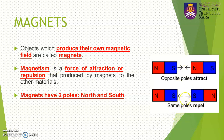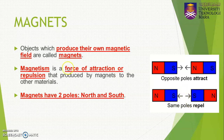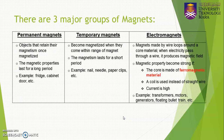When you have the same poles — for example, south and south — and bring them closer together, the same poles repel each other. This force of repulsion we also call magnetism. There are three major groups of magnets: the first is the permanent magnet, the second is the temporary magnet, and the third is the electromagnet.